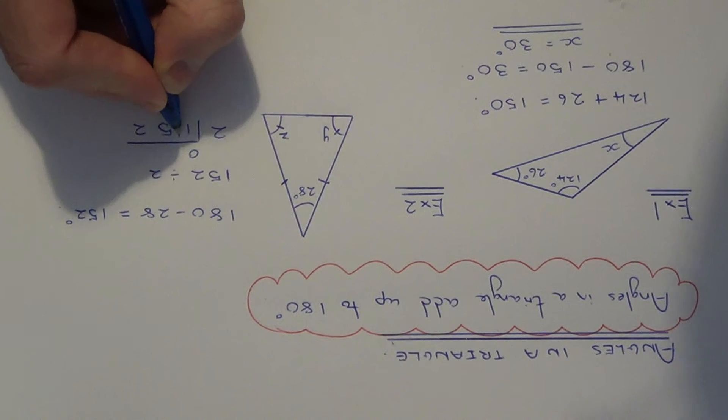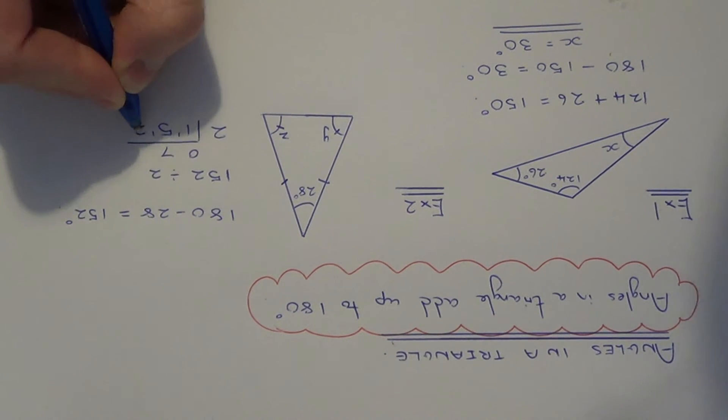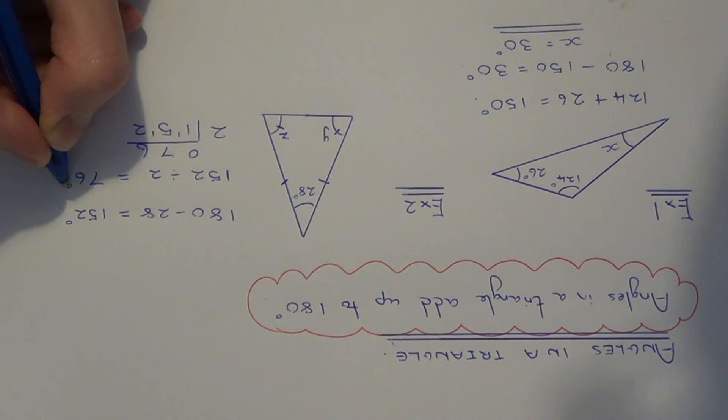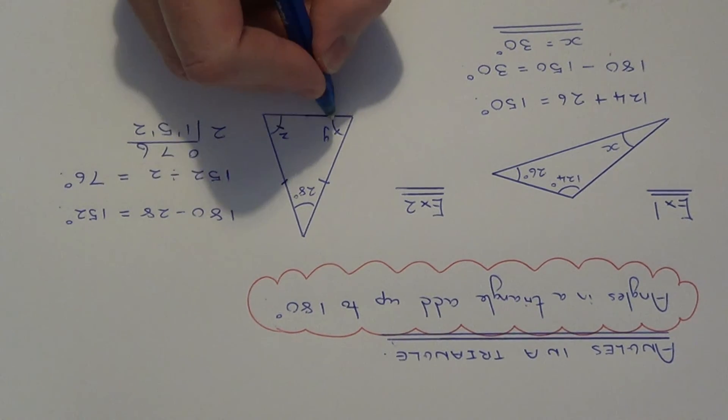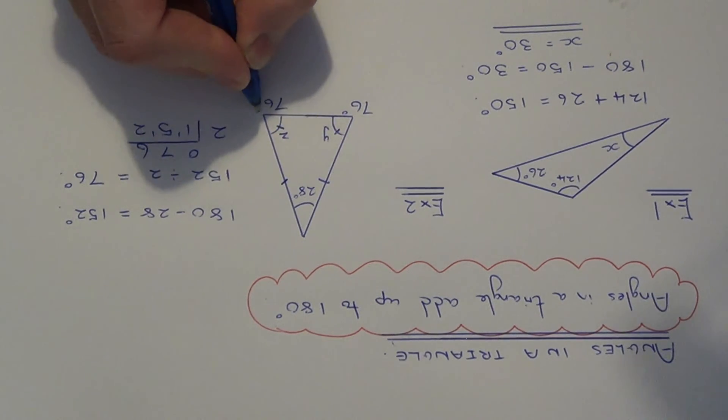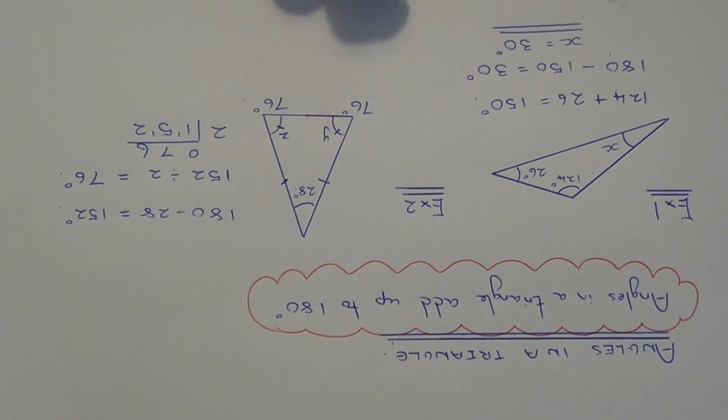That gives us 76 degrees. So angle Y is 76 and angle Z is also 76 degrees because they're both the same in the isosceles triangle.